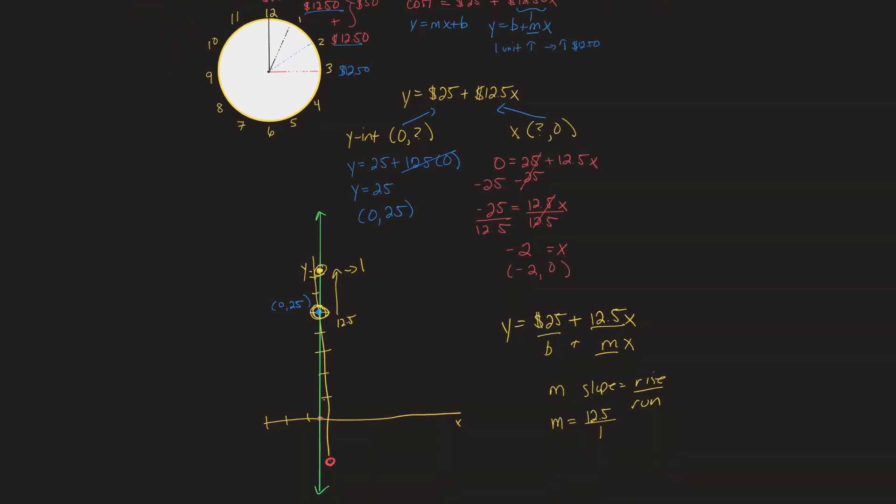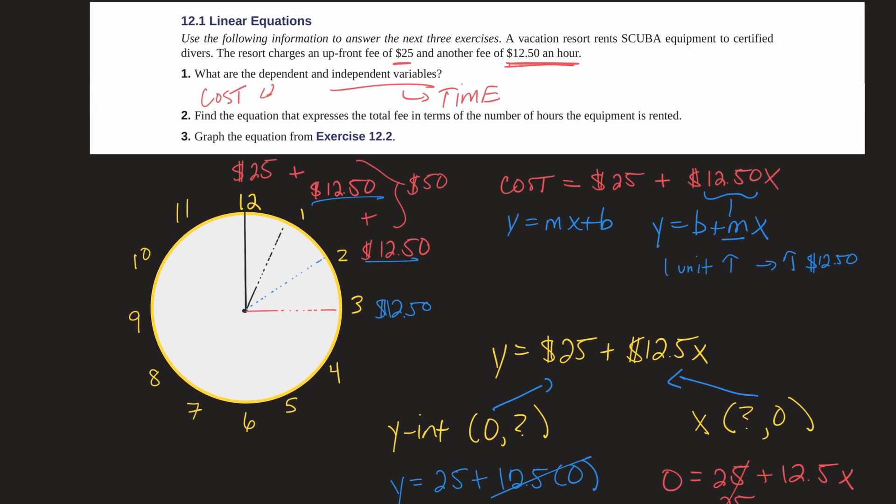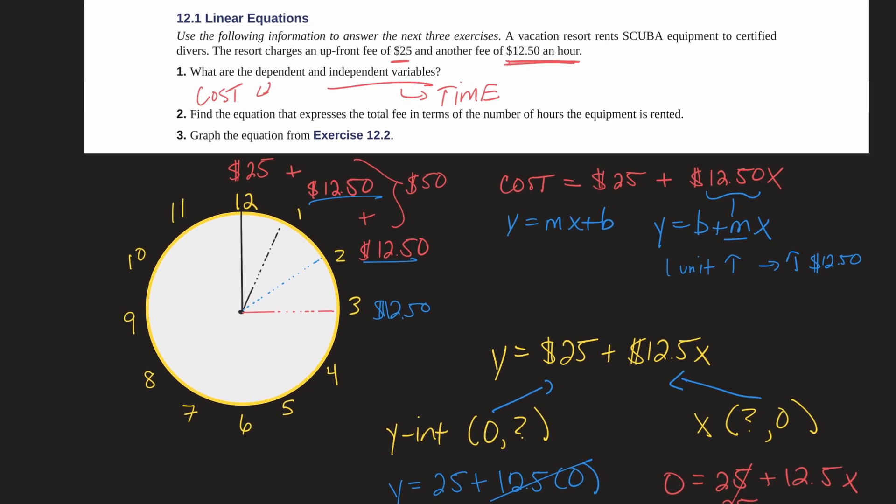So I think that wraps up everything here in this problem. We have our independent and dependent variables. Just to review, the independent variable is what's changing over time. We have our equation, which we graphed down here.